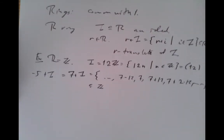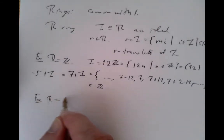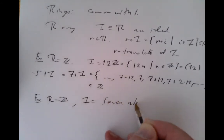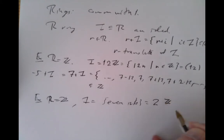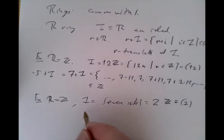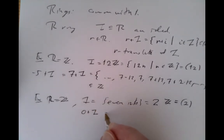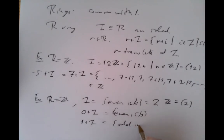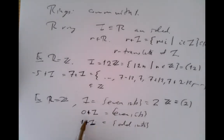A simpler example: take the ring to be the integers and I to be the set of even integers — of course that's the ideal generated by 2. Then we'd have two possible translates: the translate by 0, which is the even integers itself, and 1 plus I, which is the odd integers. Those are the two translates of the even integers.